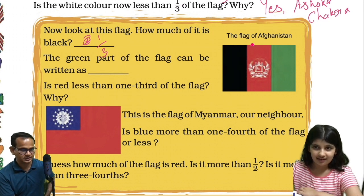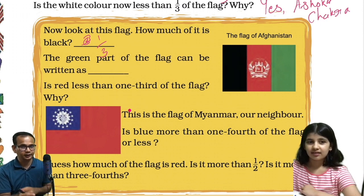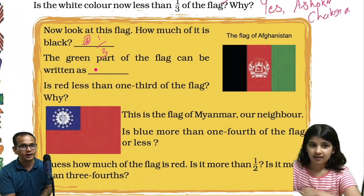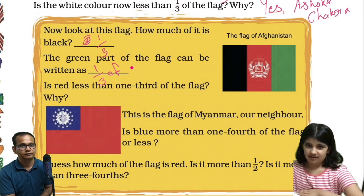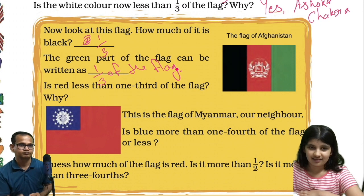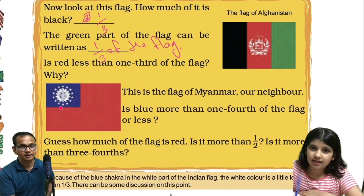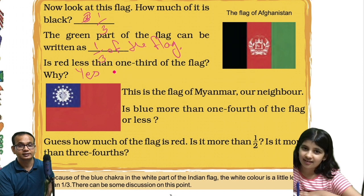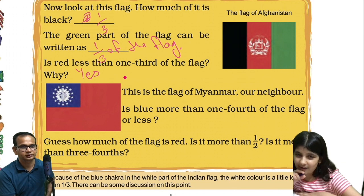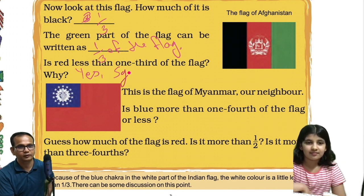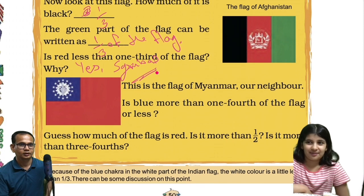This flag is the flag of Afghanistan. I know it. Very good. The green part of the flag can be written as one by three, or one third, of the flag. Is red less than one third of the flag? — Yes, because of the symbol or chakra in the middle — there is also some white there — and because of that symbol, the red part is less than one third.